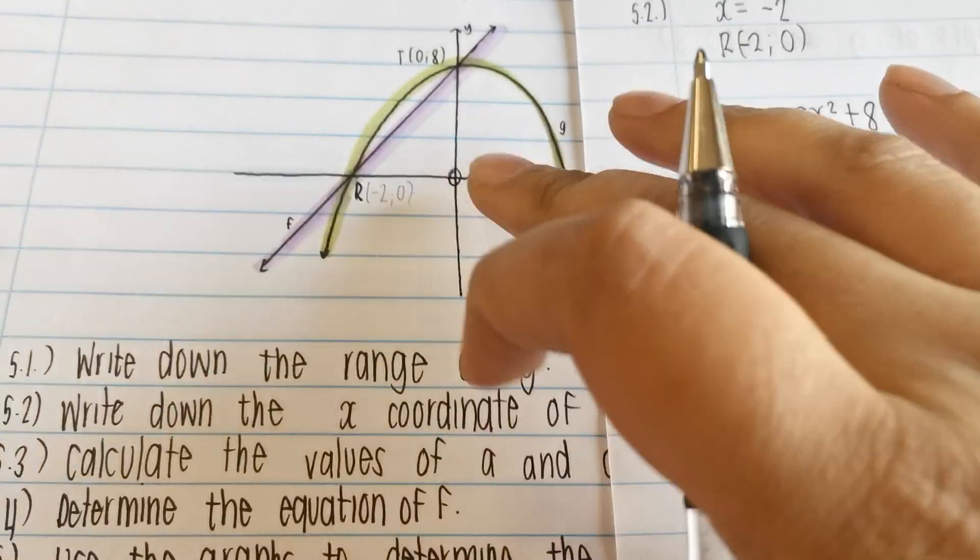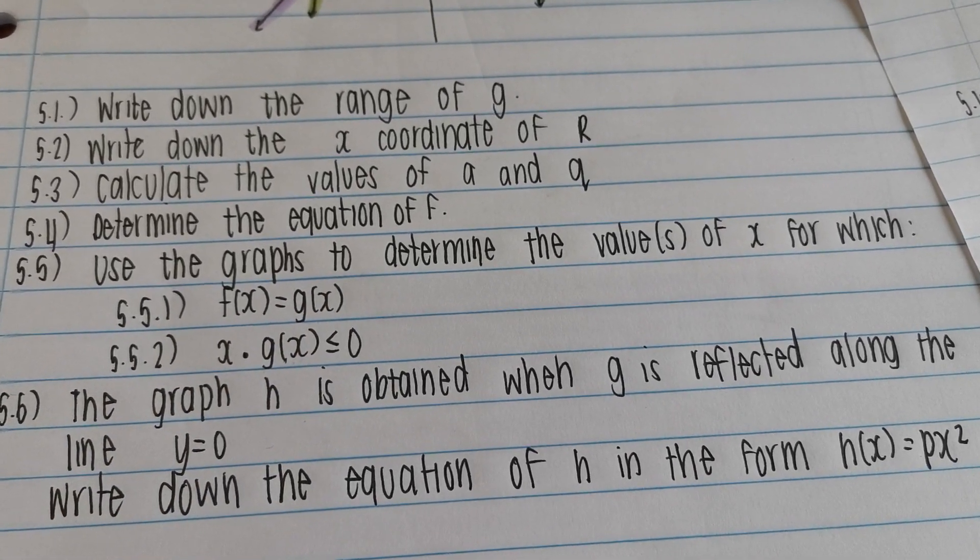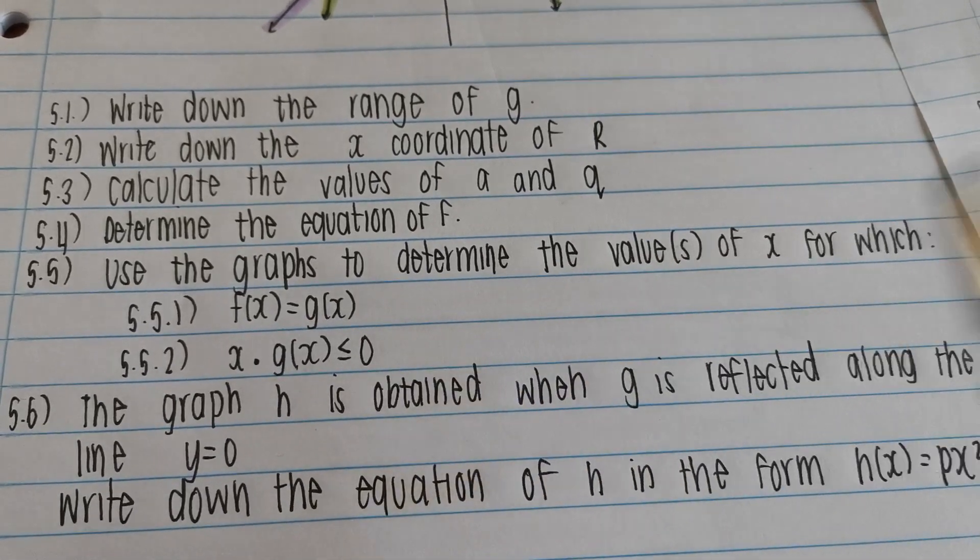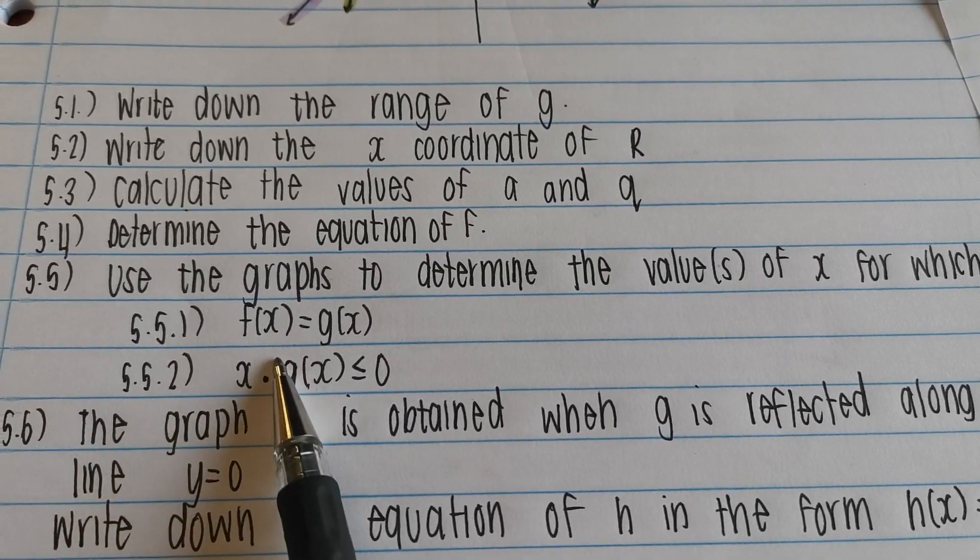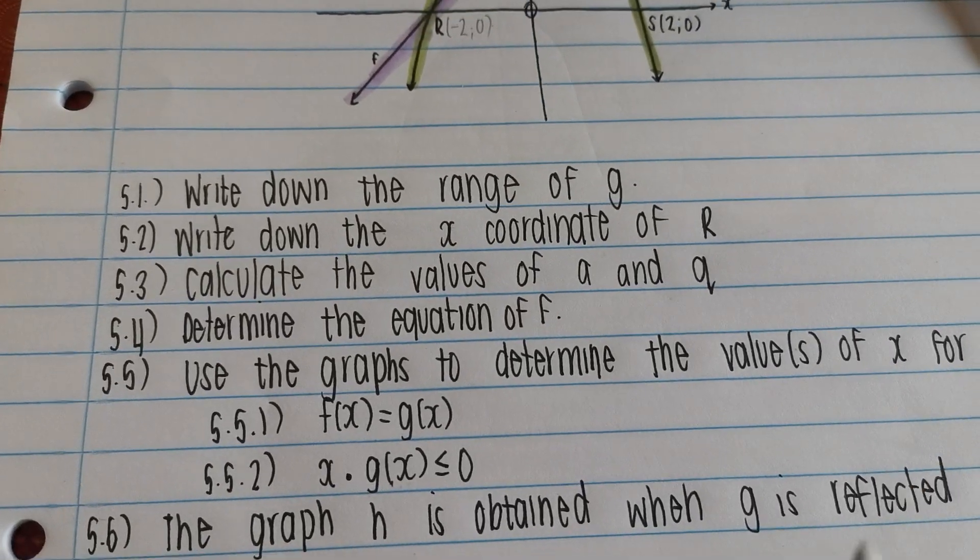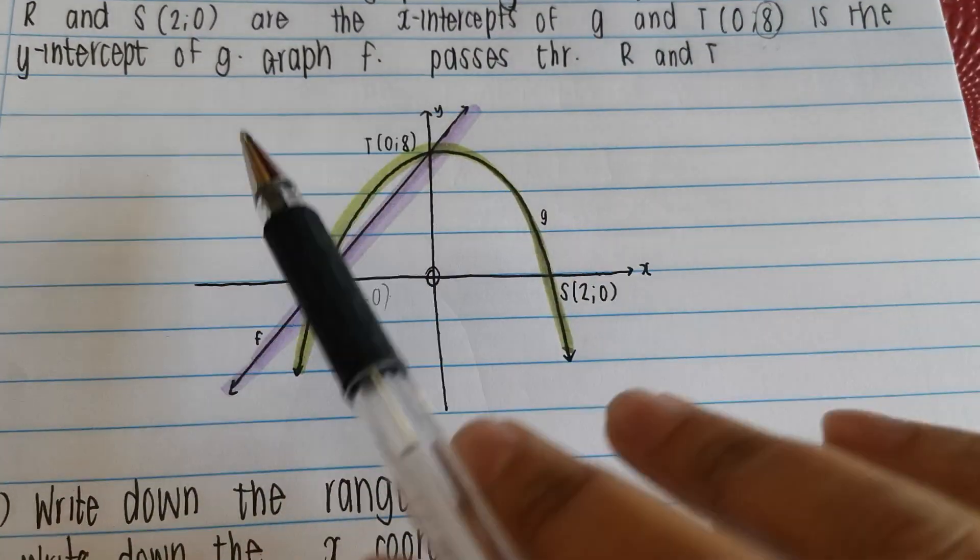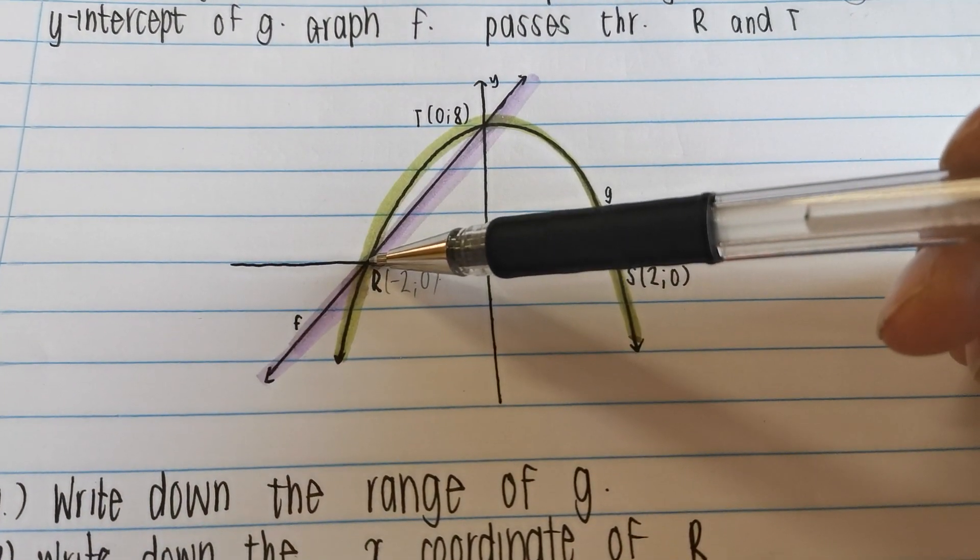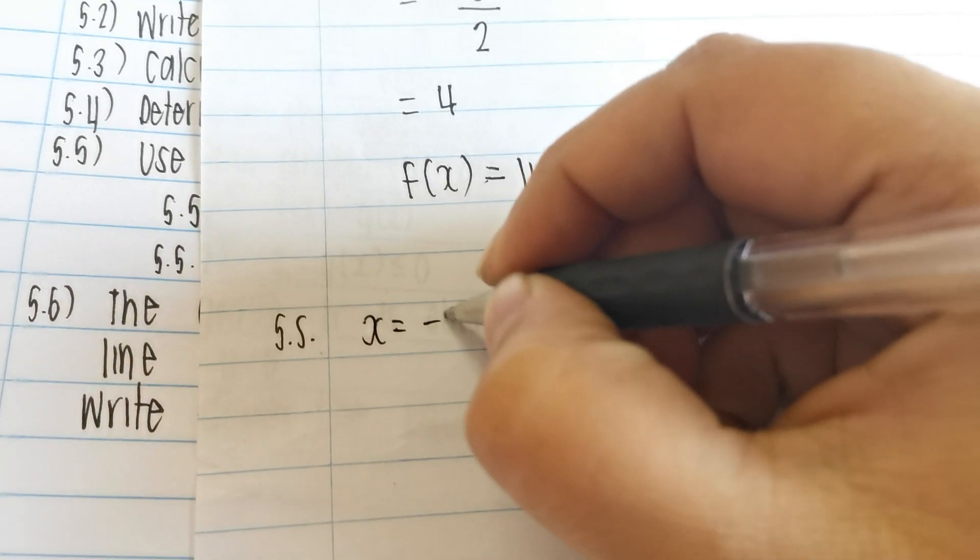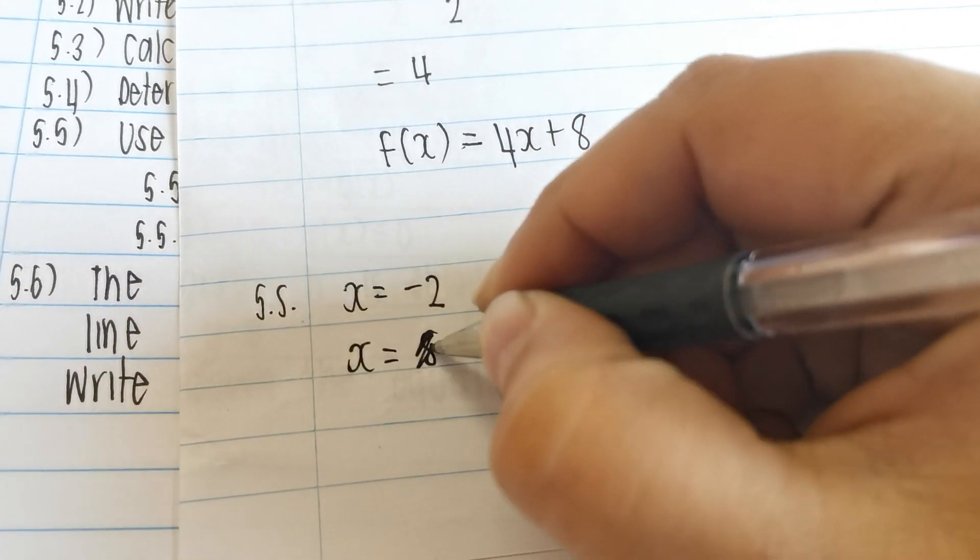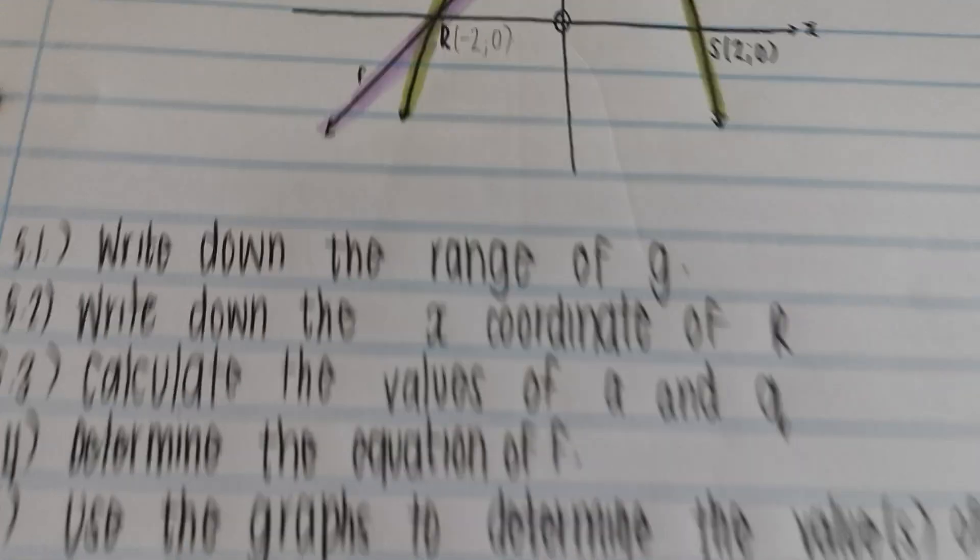Write 5.5. It says use the graph. So we're definitely using the information over here. It says use the graphs to determine the values of x for which f(x) is equal to g(x). What does this mean? It's saying what are the x values? At what x values is the one graph equal to the other or is the one graph touching the other one? That's what it's saying. Points of intersection. f(x) equal to g(x) means where are they intersecting. Let's go look at the graph. Where are they intersecting? We can see that it's passing through r and t, both of the two values where it's passing. So all you have to do for this question, x is equal to negative 2, and the other one, x is equal to 0, because they wanted the x values. Can you see here? Negative 2, 0, x values.